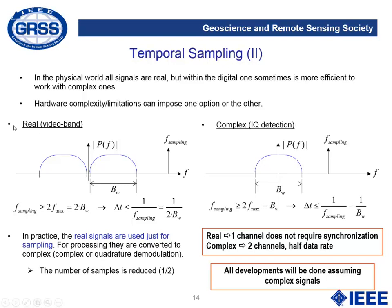Let's look at the two options. The first is the real or video band — sampling a real signal. In that case we do not completely baseband the signal; we have a symmetric spectrum. For the second option, we completely baseband the signal; the spectrum is not symmetrical, meaning the signal is complex. The maximum frequency is lower, so the sampling frequency can be half the previous one — but now we have to use two channels: one for the real part and one for the imaginary part.